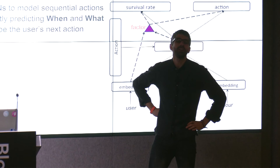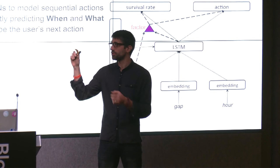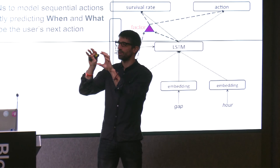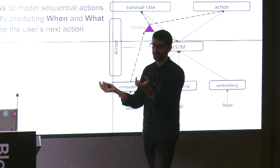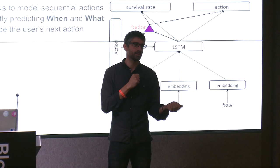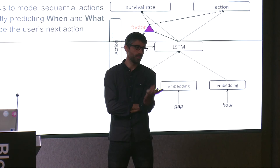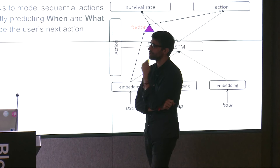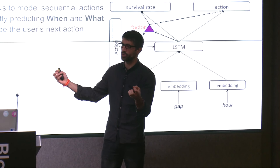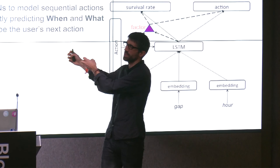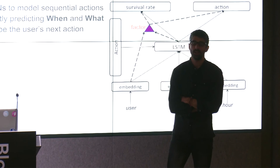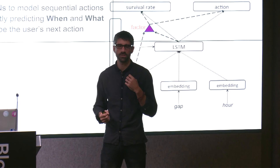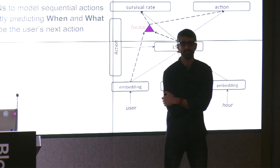For the second question about constructing training samples: if you have explicit impressions — this user was shown these five recommendations — you feed those as direct binary targets, possibly discounting positional bias since the topmost recommendation is clicked most often. If you don't have explicit impressions, you use negative sampling, very similarly to Word2Vec: rather than computing a full softmax denominator over all possible candidate items, you pick one positive example and approximately ten negatives. The choice of how to pick negative samples is quite tricky and can significantly affect online performance.